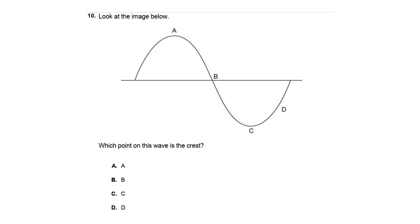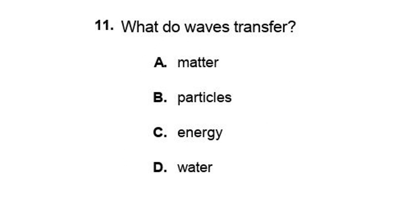Number ten: looking at the image, which point on the wave is the crest? For transverse waves, the crest is always at the top. It's not B, not C — that's the bottom, not D. The crest is at point A. Number eleven: what do waves transfer? This is fundamental knowledge — all waves transfer energy. It can't be A or B, and D is wrong because sound waves and light waves don't carry water. The answer is C — energy.